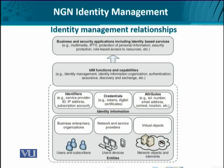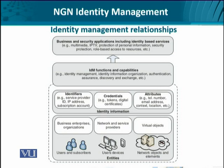Entities have certain identities marked through identifiers — the physical IDs such as service provider, IP address, or account number of a certain subscription. Against each ID we can have credentials: these could be time-limited tokens issued for a certain time period, or a digital certificate issued by a third party. Against every identifier we can also have certain attributes — for instance, for a certain user, limited attributes such as telephone number only or an email ID, or extended to include context, location, etc., so a user can be provided better service. At the entities level, we have users, devices, and network elements.